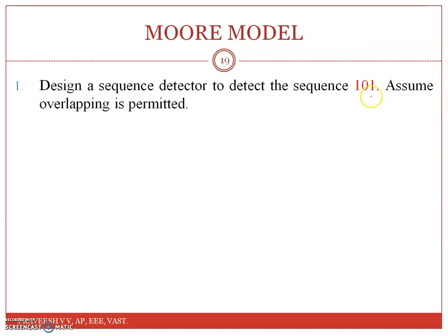Here I am considering a sequence detector which will be detecting the sequence 1-0-1. Overlapping is allowed, so once it detects 1-0-1 and outputs a 1, you can also use this 1 for the next sequence — so the next sequence can start overlapping with the previous one.